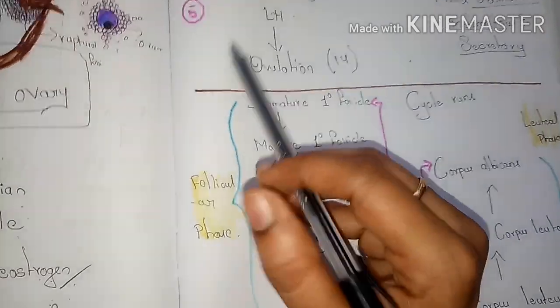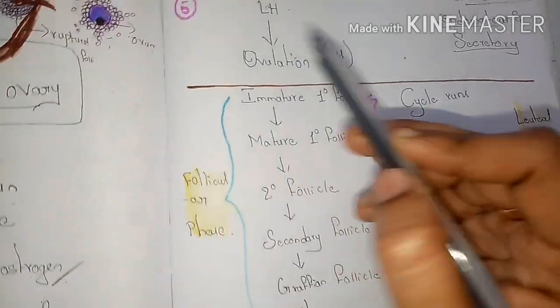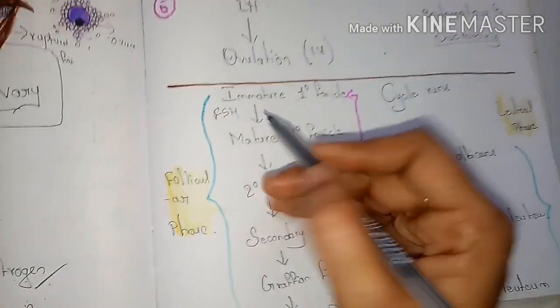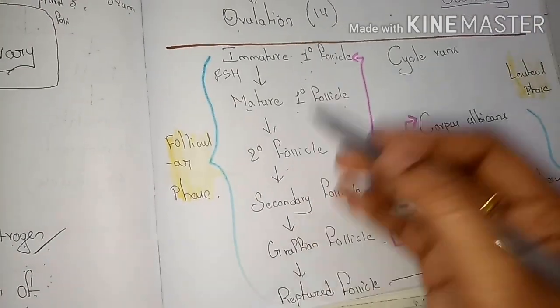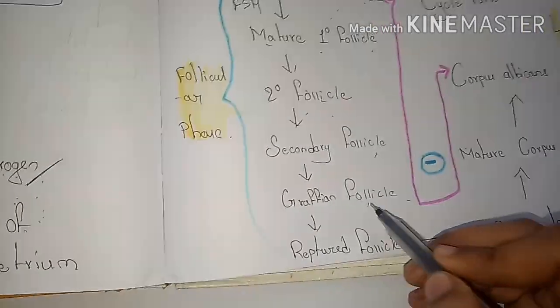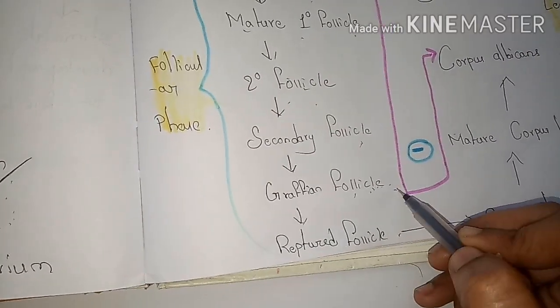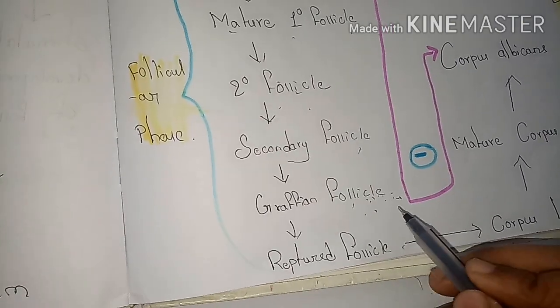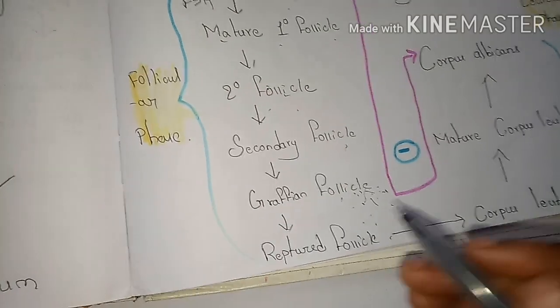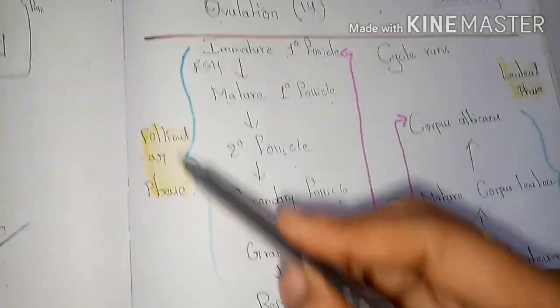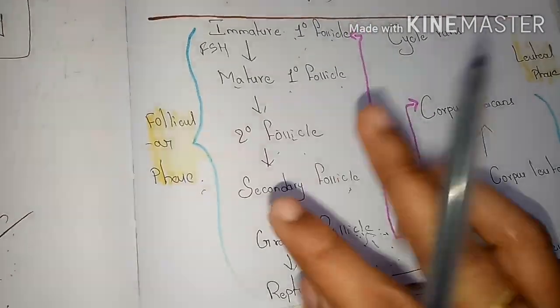To summarize in flowchart form: the anterior pituitary releases FSH and LH. FSH acts on immature primary follicles, converting them to mature primary follicles, then to secondary follicles, and then to Graafian follicles. The Graafian follicle produces estrogen, which causes an increase in LH, leading to ovulation — the follicle ruptures and the ovum is released. All of this follicle development is known as the follicular phase.